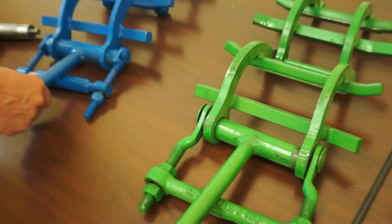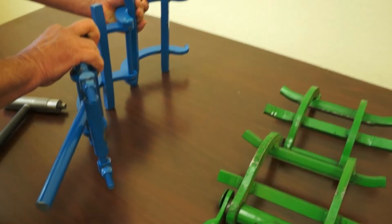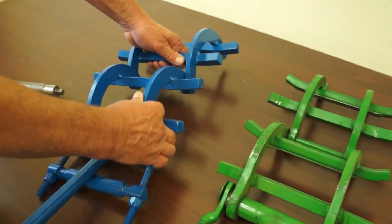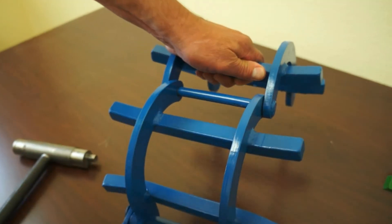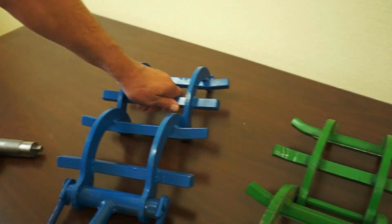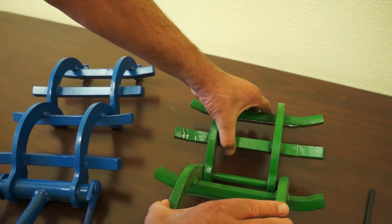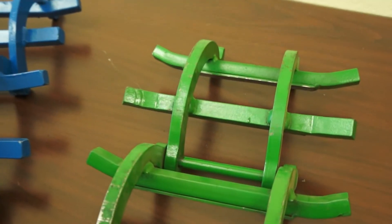If you look at the hinge mechanism, it is much tighter, much snugger on the blue clamp compared to the green clamp. The green clamp has much more leeway, much more flexibility.